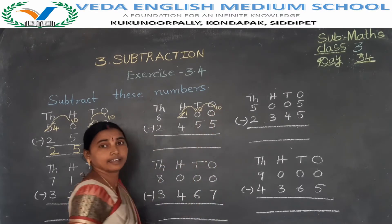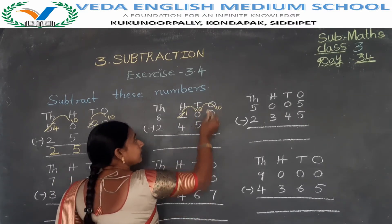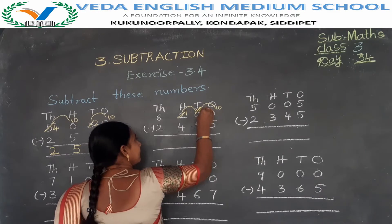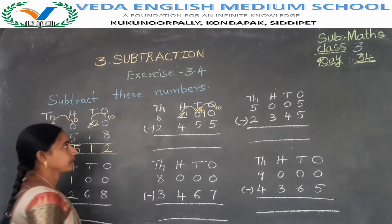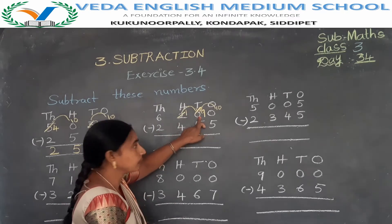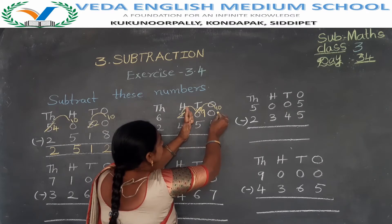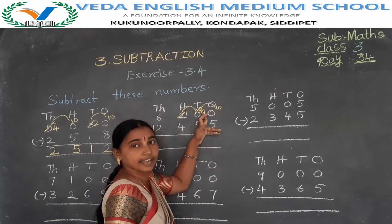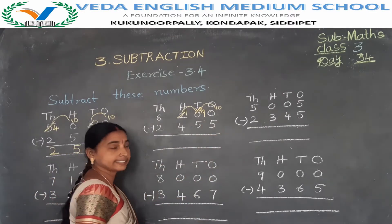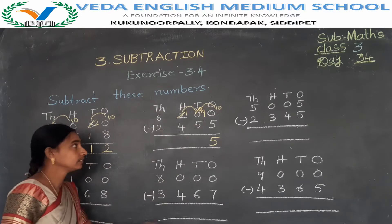The 10th place 0 becomes 10. But already 1 ten has gone to the ones place, so how many tens are there? 9 tens — 10 becoming 9. Now do the subtraction: 10 minus 5 is 5.